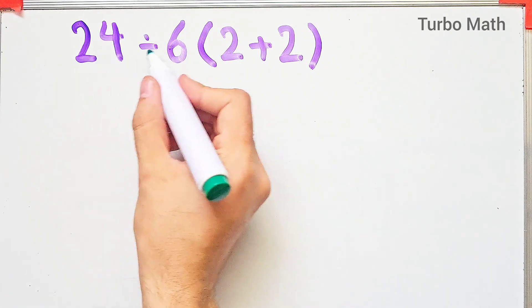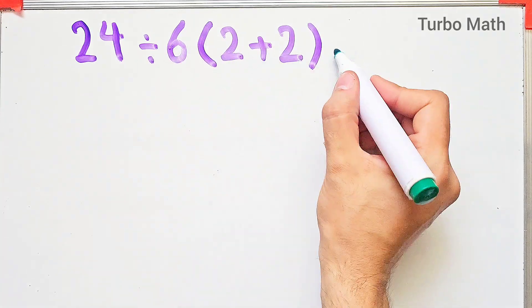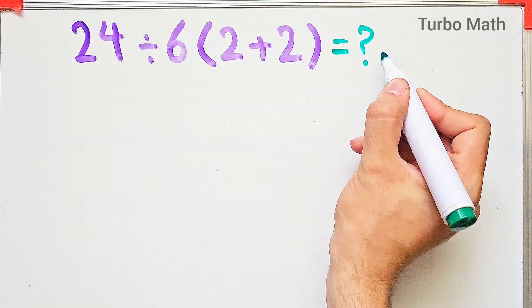24 divided by 6 then times 2 plus 2. What is the answer of this question? Can you solve it?